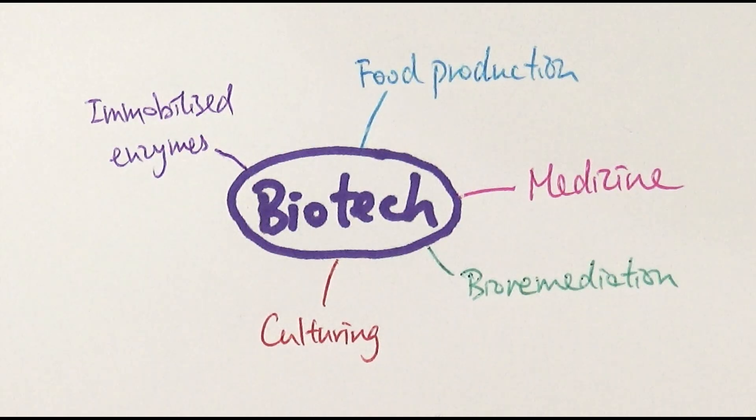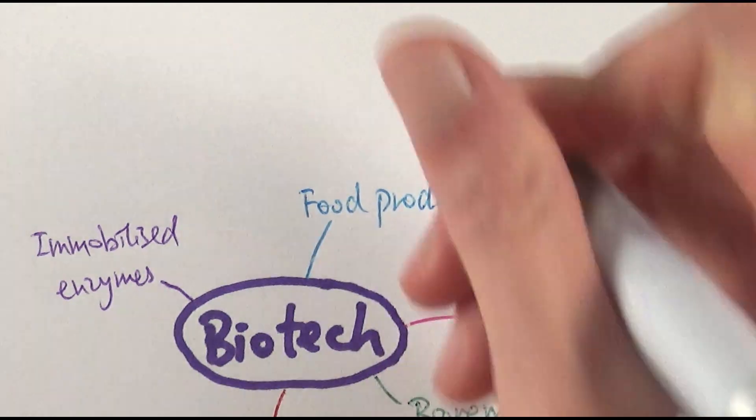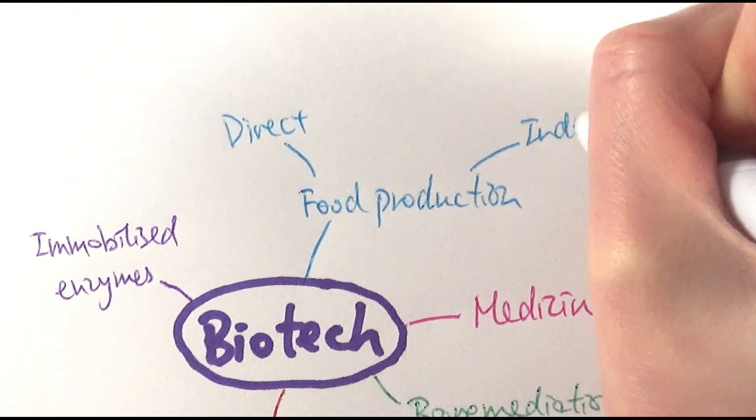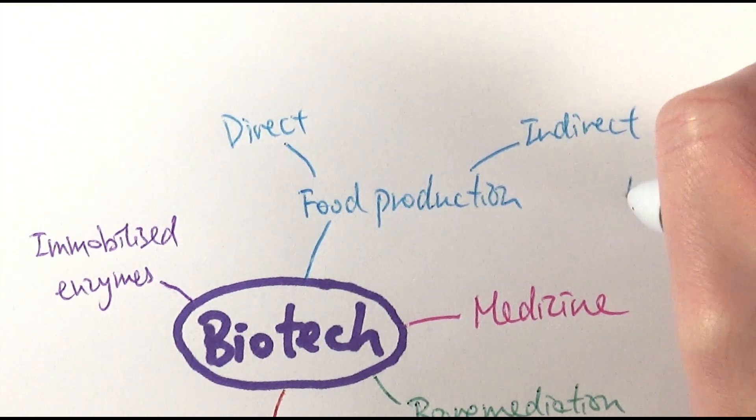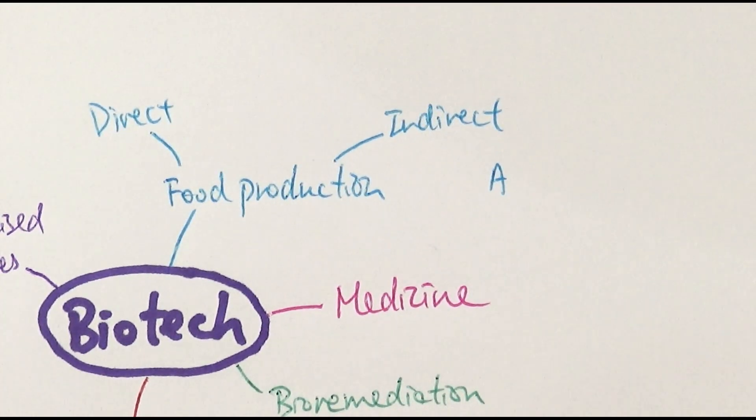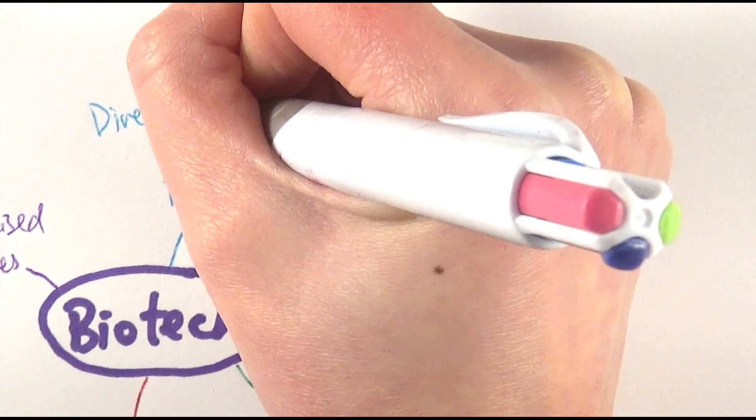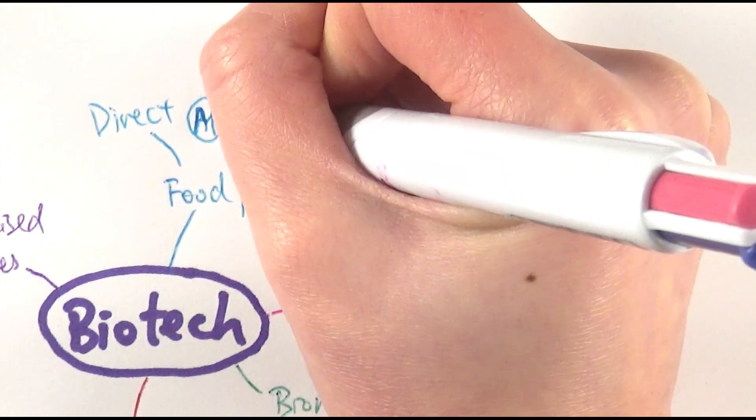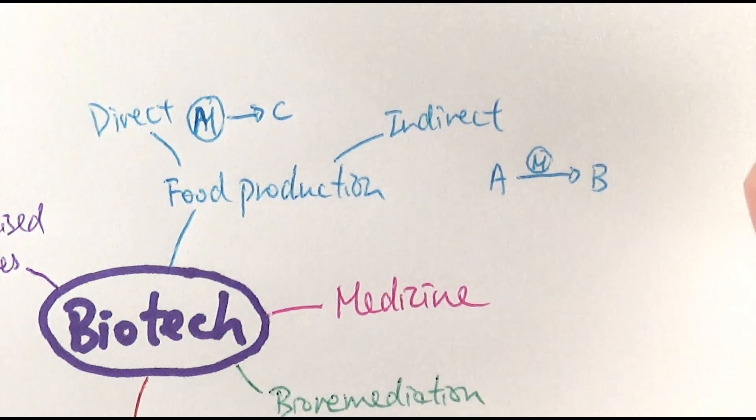Starting with food production, there are two major parts. One would be direct food production, and the other would be indirect. Indirect food production means you start with food A and use microorganisms to turn it into food B. Whereas for direct food production, you have the actual microorganism directly making the food that you want.